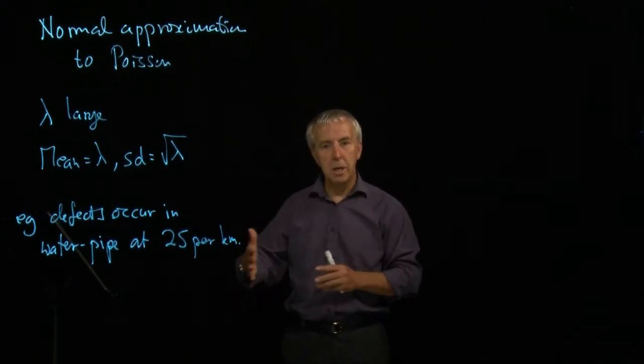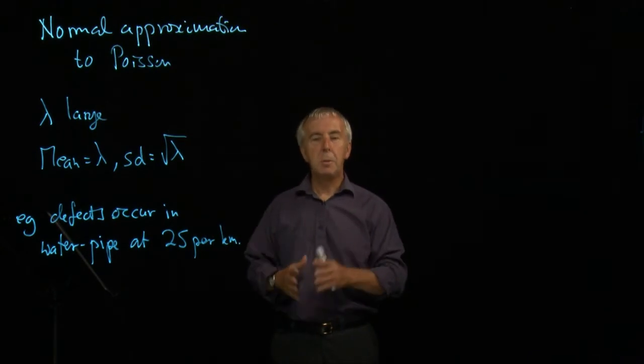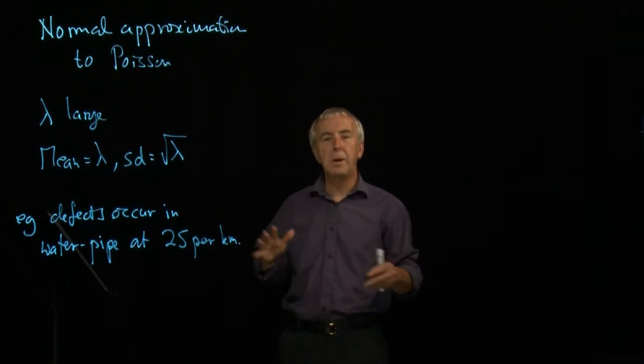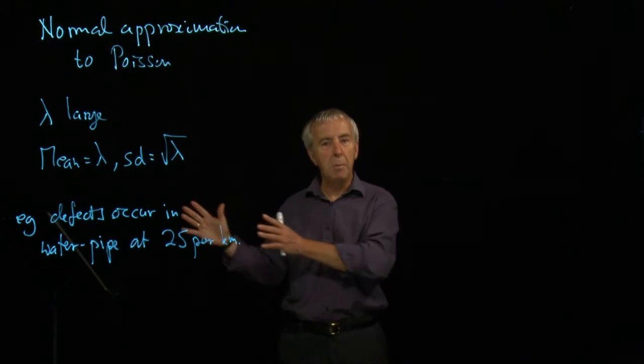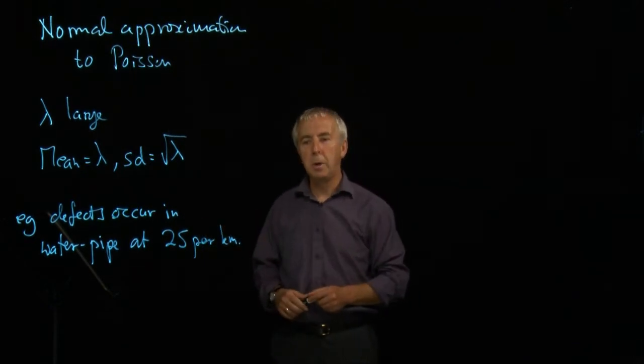But these are not regularly spaced. They're occurring randomly. Some kilometers might have very few defects. Some might have rather more. But the average number over the whole length of the pipe is 25.